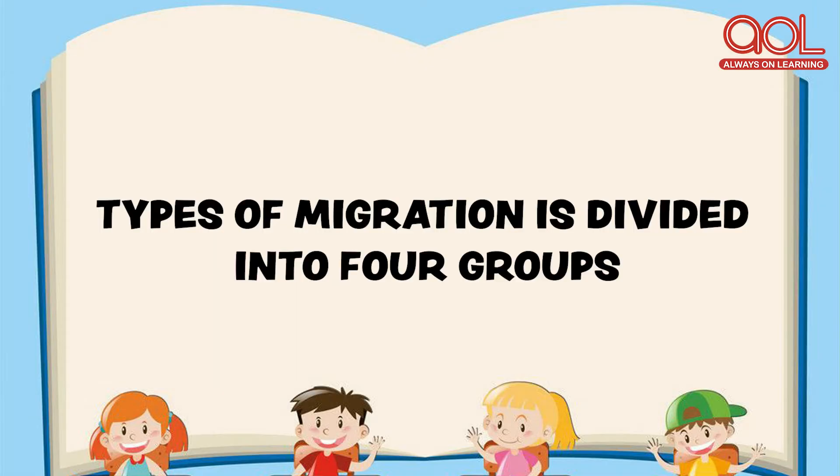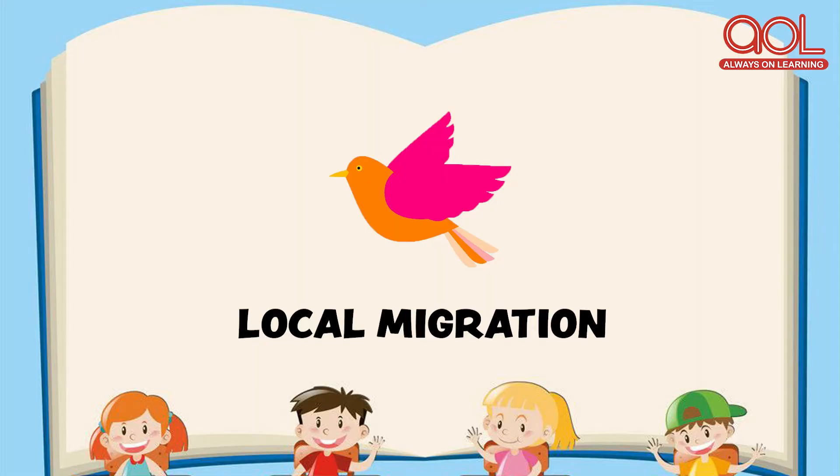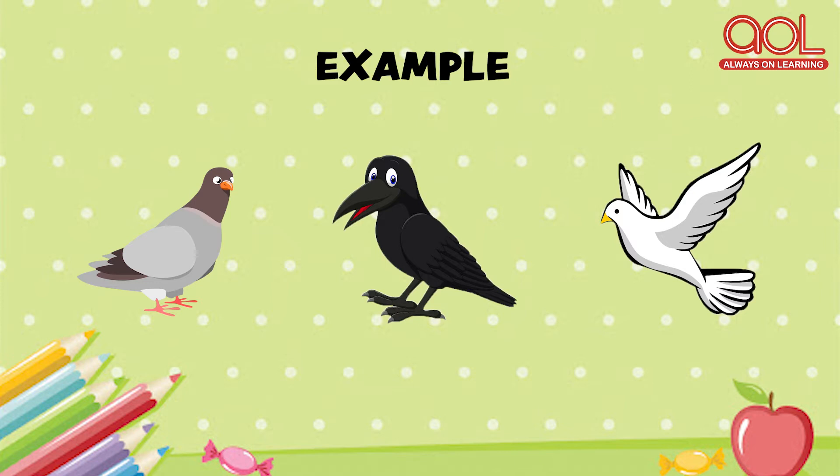Do you know, this type of migration is divided into four groups. Some birds are involved in local migration — they are resident birds who travel within the area and manage themselves very well. For example, pigeon, crow, and dove. Next comes short distance migration. A very common example is Robins, who travel from lower regions to higher regions.